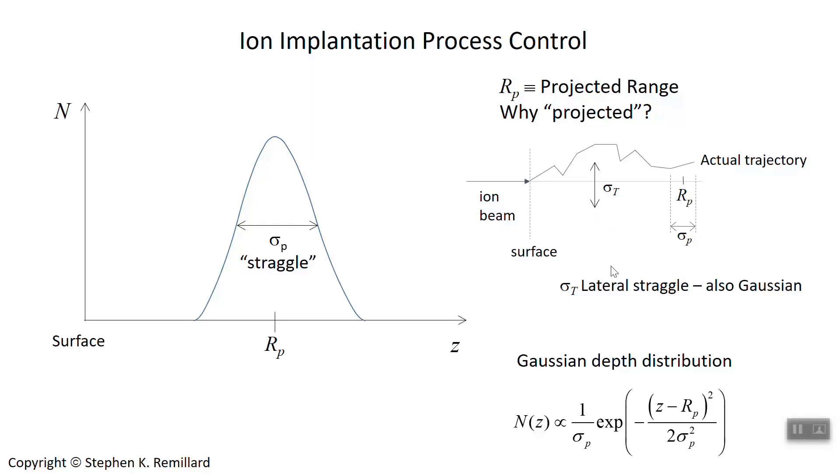You end up having two kinds of straggle: the projected range straggle sigma_p, as well as the transverse or lateral straggle (the t is for transverse) sigma_t. So there's a range—if you wanted your beam to end up right there, it's going to end up in a box around there of dimension sigma_p by sigma_t as the most likely dimensions. You do have this Gaussian distribution of ion density versus depth.